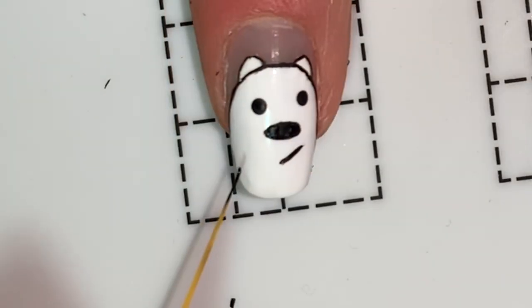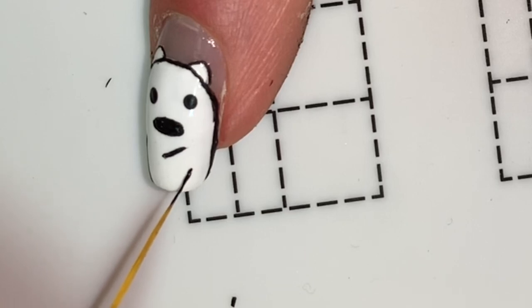Next up is the arm. Originally I did it too big and it went off my nail, so I just repainted it smaller here.